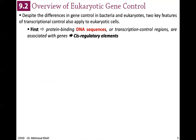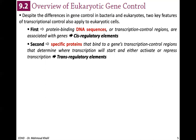First, there are cis-regulatory elements — protein-binding DNA sequences, also called transcription control regions, that are usually associated with genes. Second, there are specific proteins that bind to these control regions to determine where transcription will start and to either activate or repress transcription. These specific proteins are collectively called trans-regulatory elements. So cis-regulatory elements are DNA sequences requiring protein binding, and trans-regulatory elements are the specific proteins that bind to them.